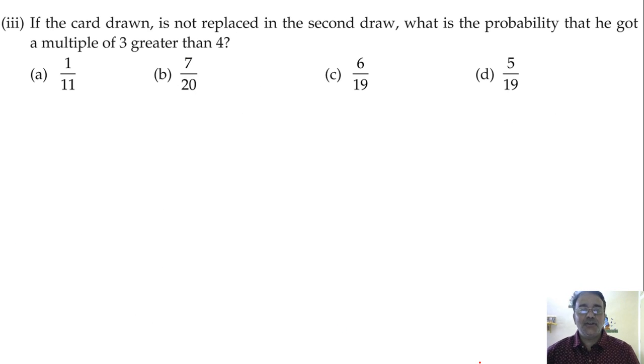Next question: if the card drawn is not replaced in the second draw, what is the probability that he got a multiple of 3 greater than 4? So how many numbers are there which is a multiple of 3 greater than 4? First is 6, and second is 9, 12, 15, then 18. How many?